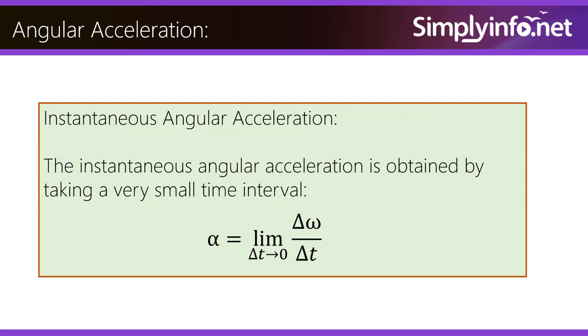Instantaneous angular acceleration. The instantaneous angular acceleration is obtained by taking a very small time interval. Alpha equals the limit as delta t approaches zero of delta omega by delta t.